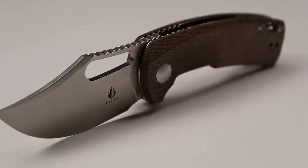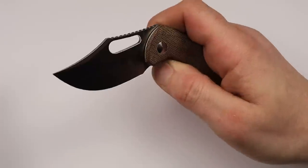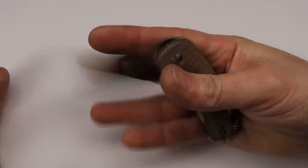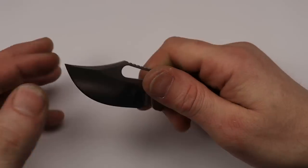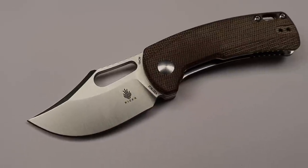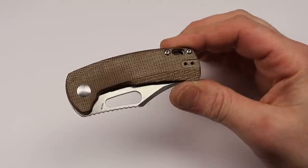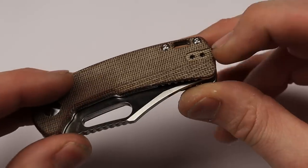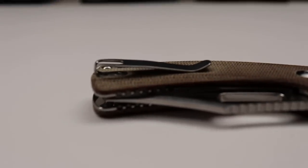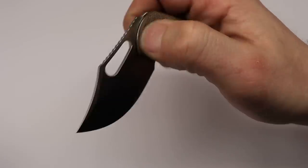This is the Kizer Urban Bowie. And it's in 154CM. And it's really not my style at all. But I can't deny, man, this thing is done so, so, so well. It feels super premium, even though it's a budget knife. Great micarta. Good quality micarta. You can see it's got a reversible inset clip with flat screws.